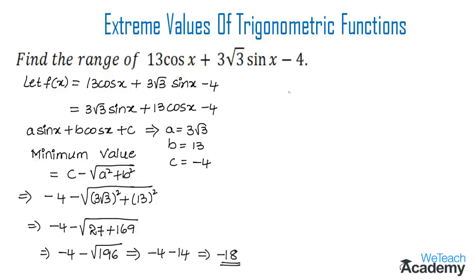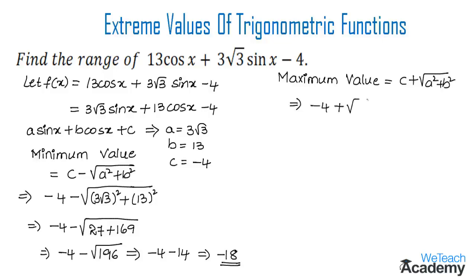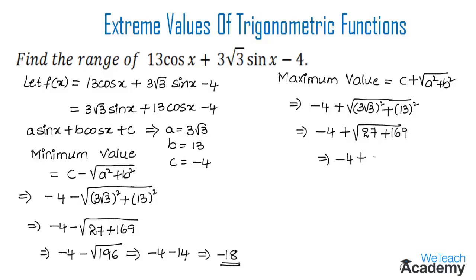Now let us find the maximum value. The maximum value is given by c + √(a² + b²). Substituting: -4 + √((3√3)² + 13²) = -4 + √(27 + 169) = -4 + √196 = -4 + 14 = 10.